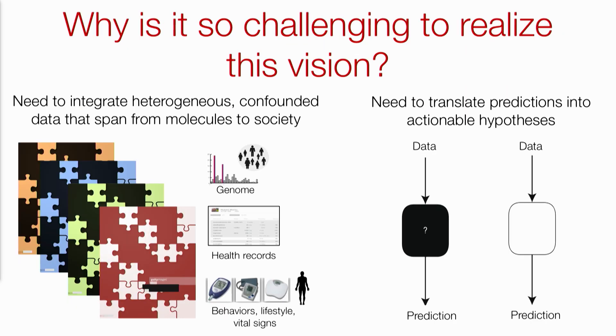However, while those opportunities are really exciting, it's very challenging to realize this vision in practice. So what are the key challenges that prevent us from realizing all these opportunities for AI in health and medicine? First, we need to integrate and combine very heterogeneous datasets that are confounded in many different ways and that span levels going from the molecular level all the way up to the societal level.